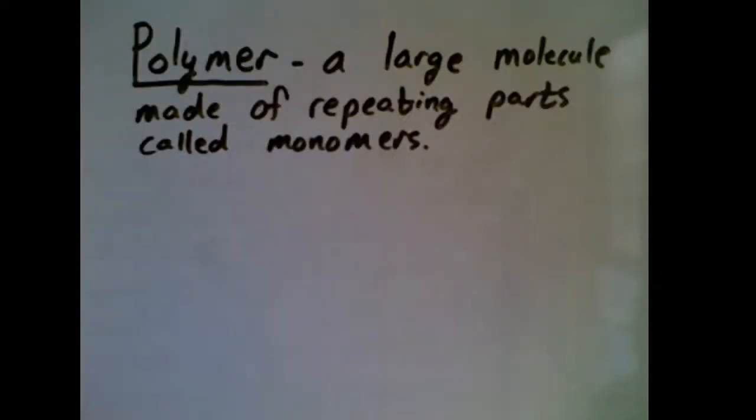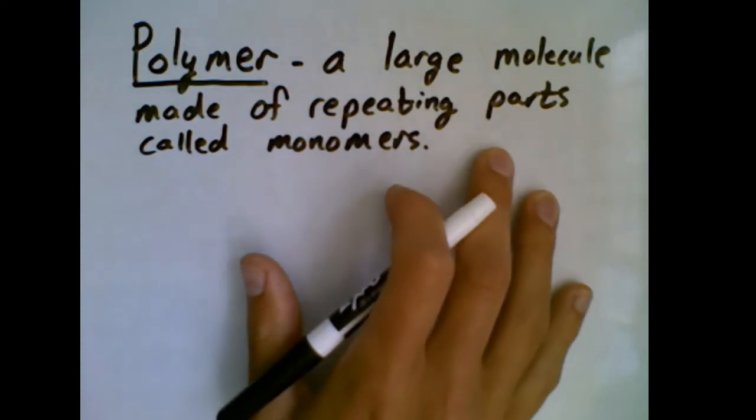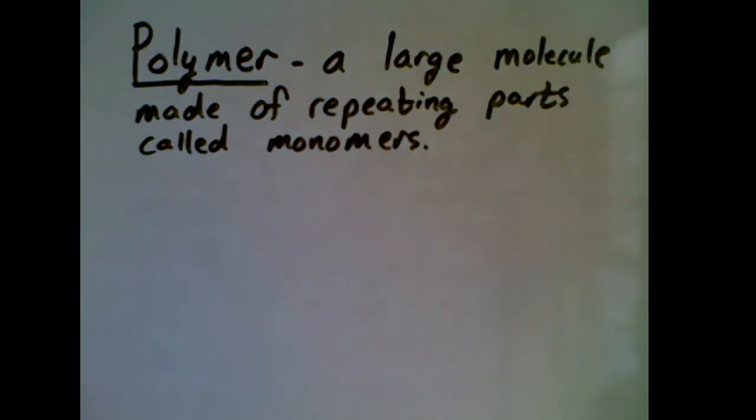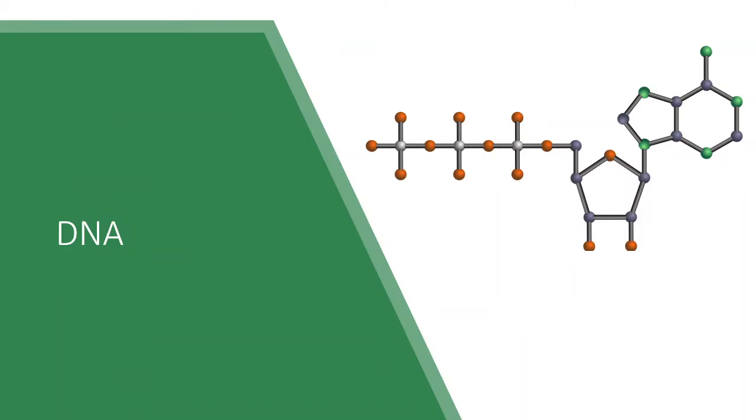This other category of molecules are called polymers. A polymer is just a very large molecule that is made out of repeating pieces that we call monomers. We've actually seen a polymer before when we studied DNA and we were studying biology. DNA is a polymer and it's built out of repeating pieces that are called nucleotides.